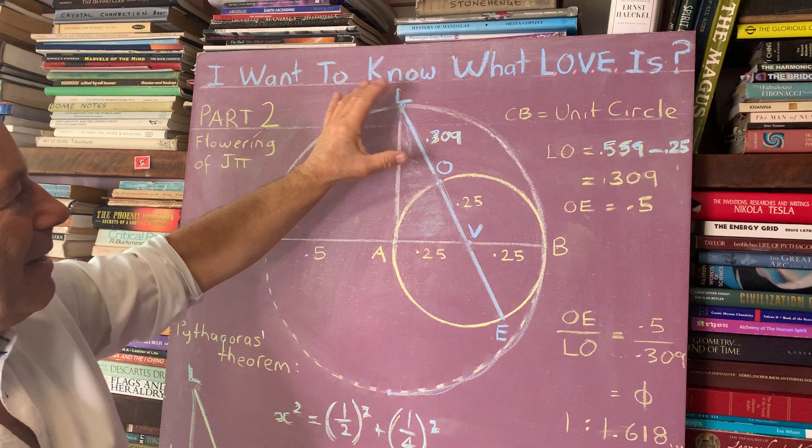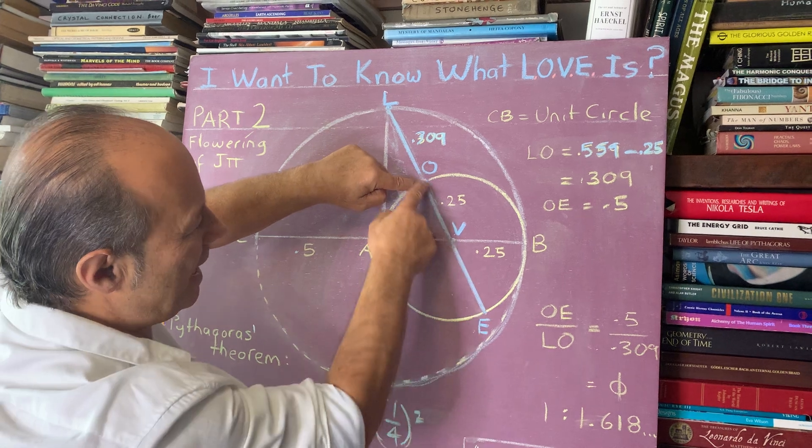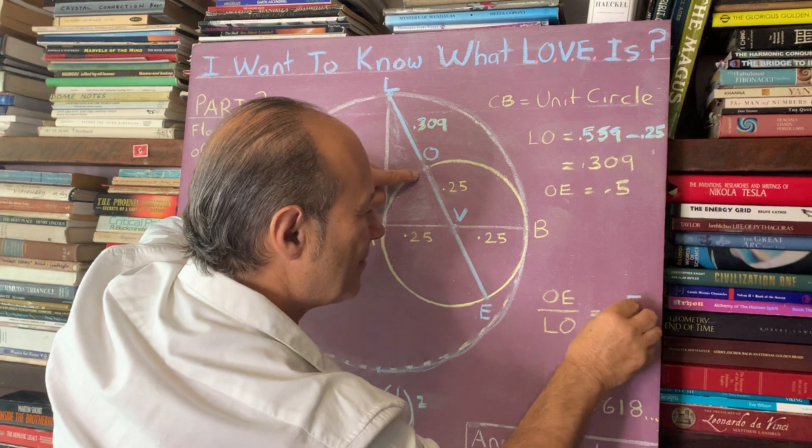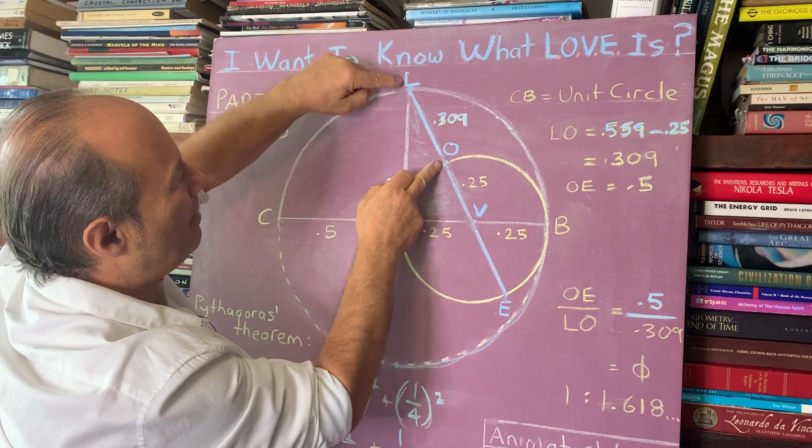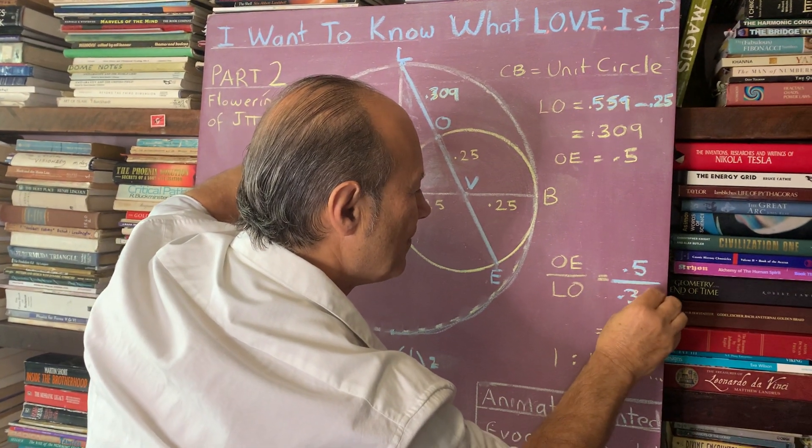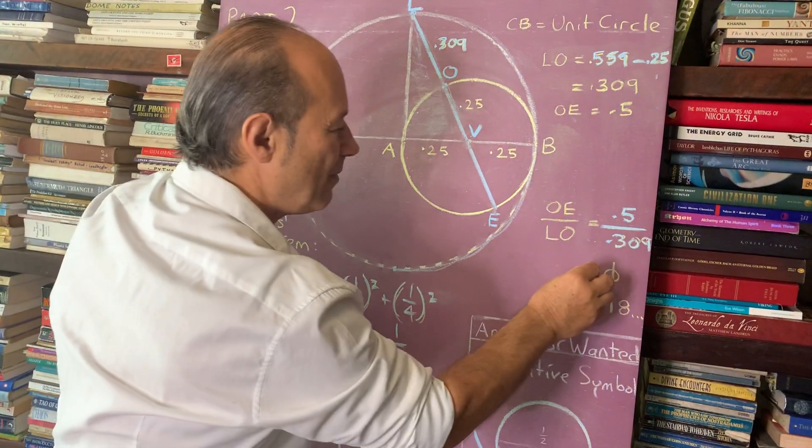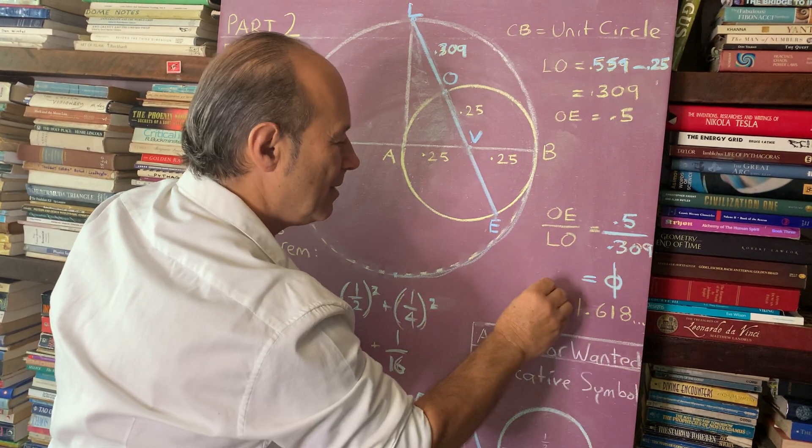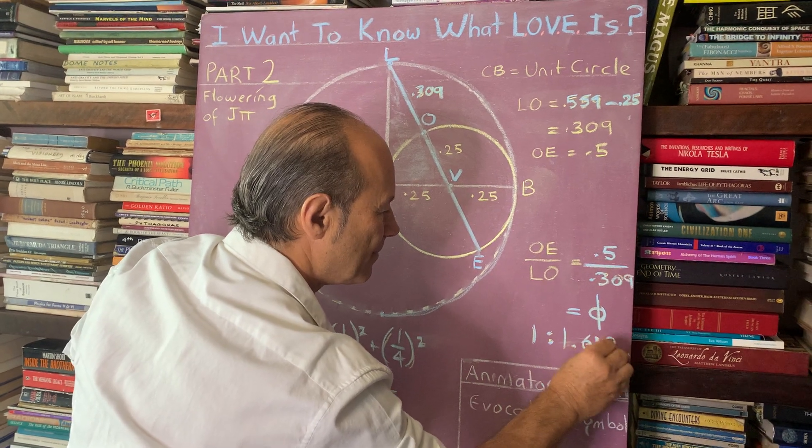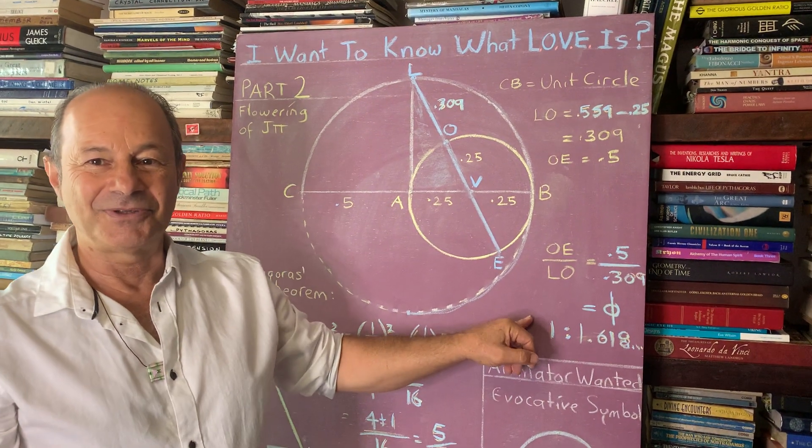So why is that important? Because now we know, we want to ask, what's the relationship between this distance here, which is half? So we know that this distance, O-E, is 0.5, or half. And I'm going to divide the longest section by the smaller section, which is 0.309. So if you get your calculator out and divide 0.5 by the 0.309, thanks to Pythagoras' theorem, we end up with the golden ratio, which is the ratio of 1 is to 1.618. And that's genius. That's what we wanted to establish. Love has a connection to the divine proportion. Love is phi, the phi love.